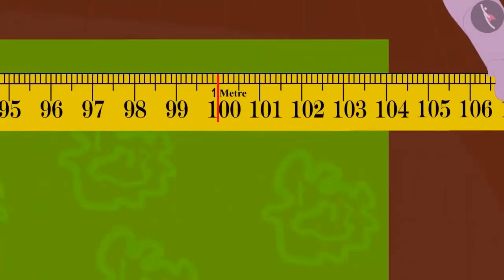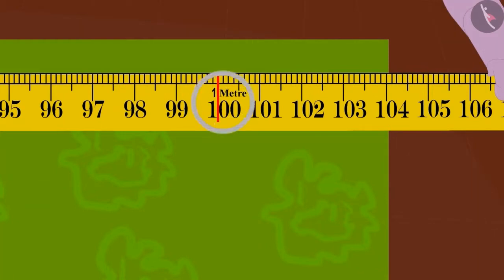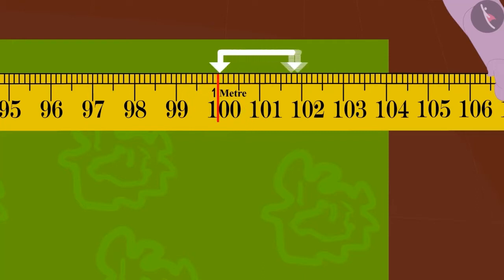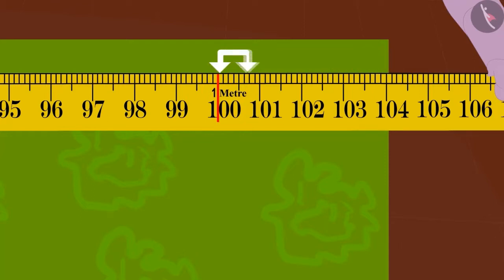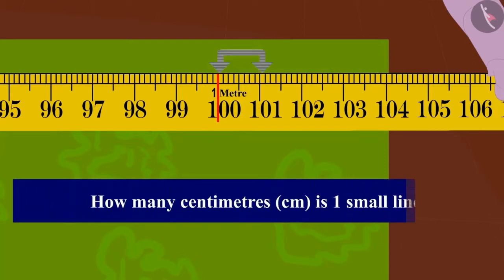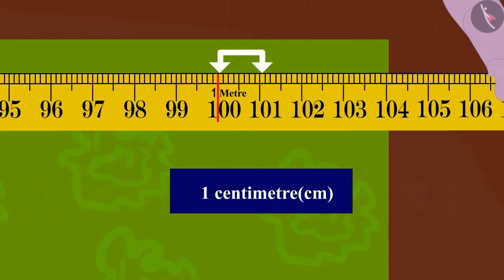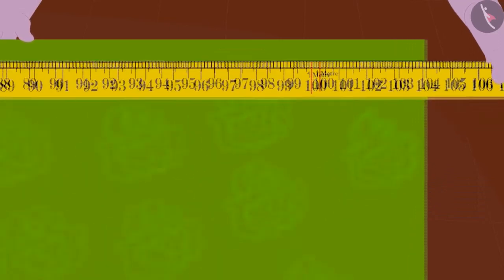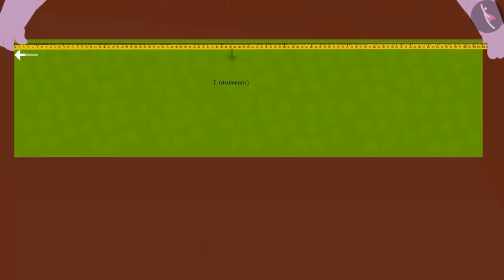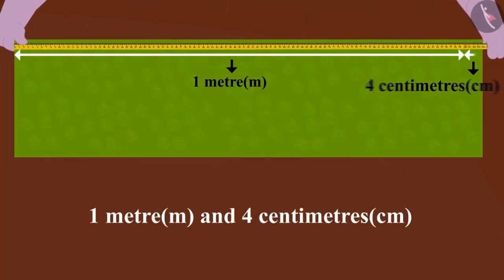Children, can you tell how long this material is? The length of the material is more than the length of one meter. Each small line represents one centimeter. This way, the length of this material is one meter and four centimeters.